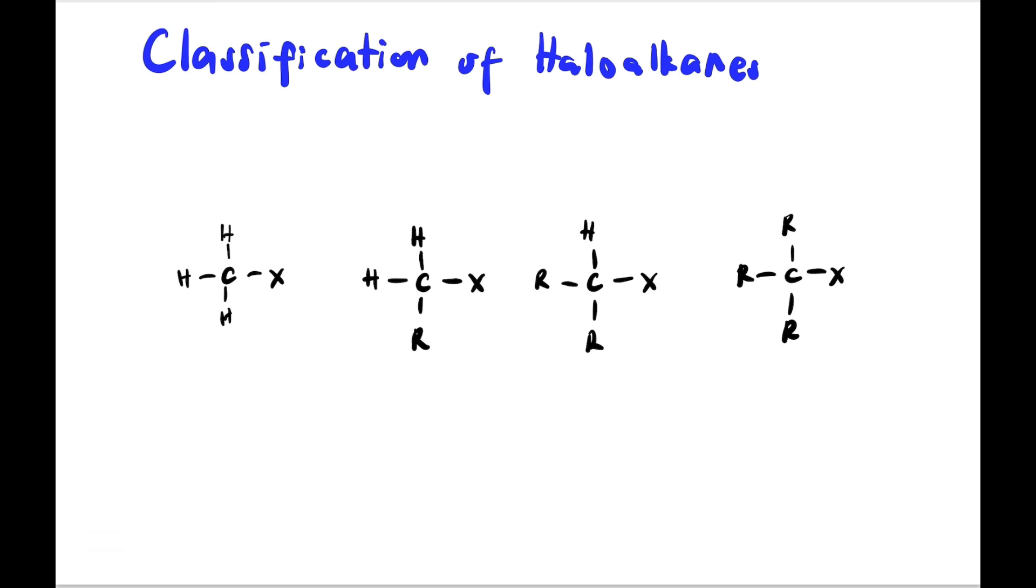Haloalkanes can be classified into four different classes. The first is methyl halide, with no R group attached to the carbon bearing X. The second is primary, with one R group. Third is secondary haloalkanes, and last is tertiary haloalkanes. The classification is based on how many alkyl groups are attached to the carbon bearing X.